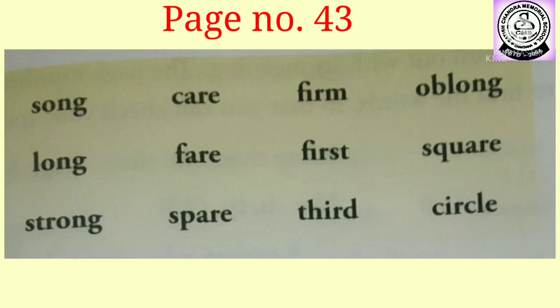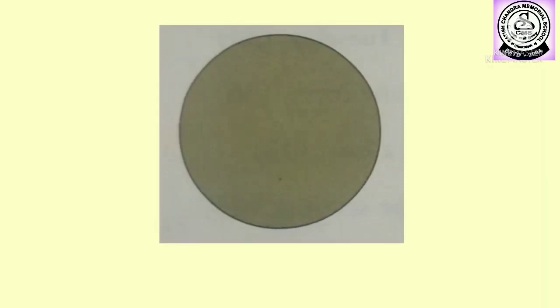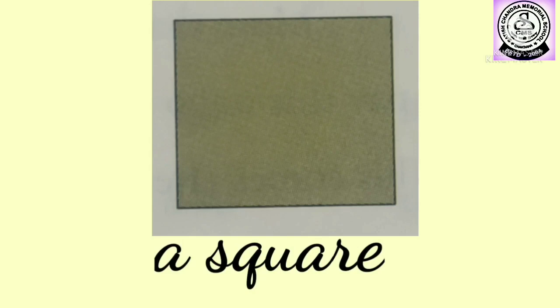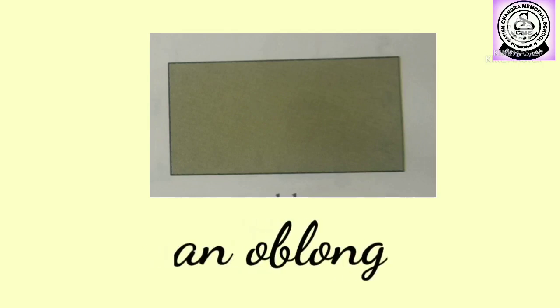C-I-R-C-L-E circle. Children, can you tell me what is this figure called? Yes, this figure is called a circle. Now can you tell me which figure is this? Yes, this is a square. Now can you tell me which figure is this? Yes, this figure is called an oblong. Oblong means rectangle.